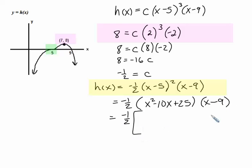Then we're going to leave that negative one-half out front, and we're going to multiply those two parentheses together. I'm going to take the x to everything in the first set of parentheses. So x times x squared will be x cubed. Then we'll get minus 10x squared plus 25x.